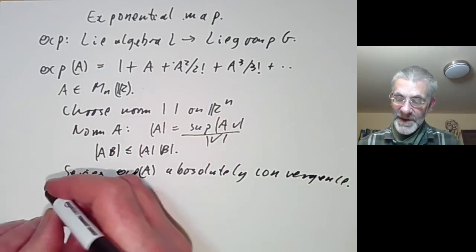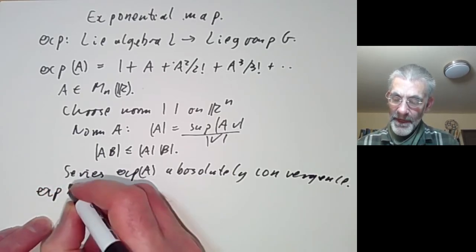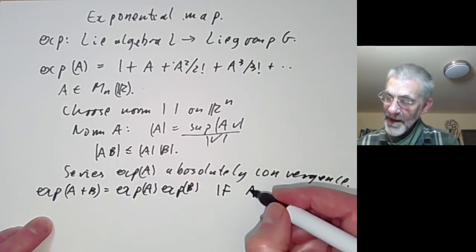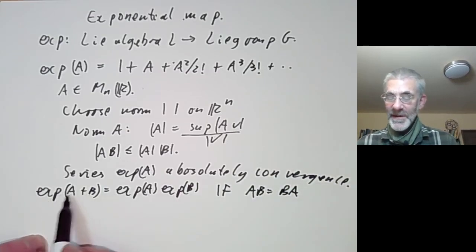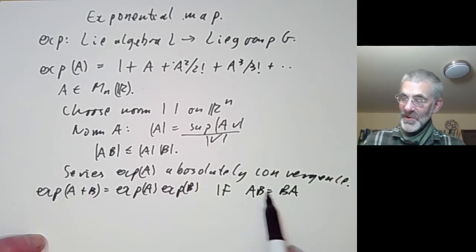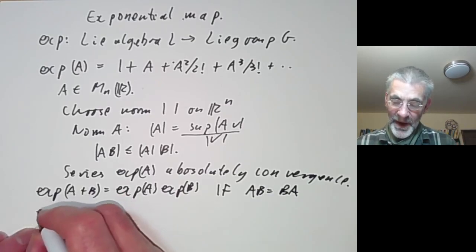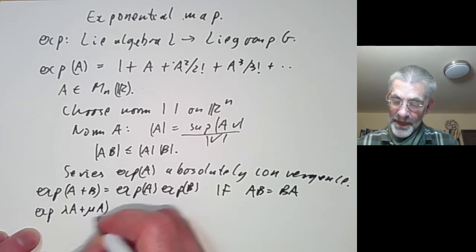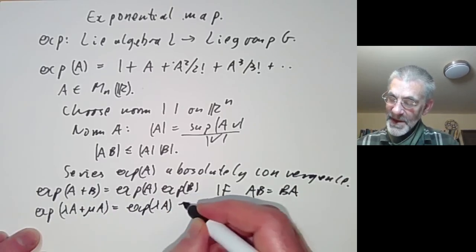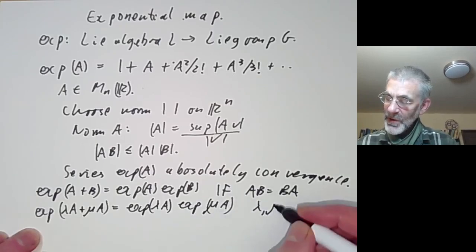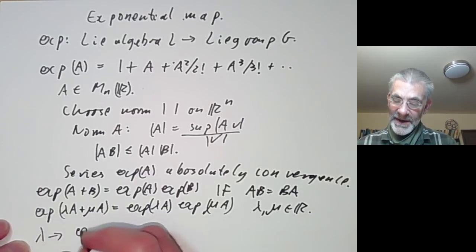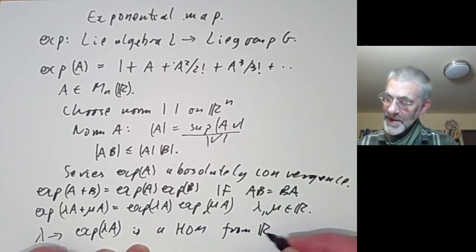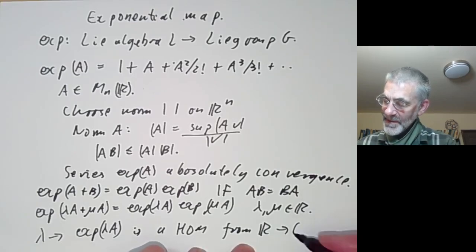We can also check some fairly obvious properties. For example, exp(A + B) = exp(A)·exp(B) if AB = BA. The proof is very similar to the proof of the analogous relation for real numbers, except you do need to use convergence at some point. In particular, exp(λA + μA) = exp(λA)·exp(μA) for any real λ and μ. So the function taking λ to exp(λA) is a homomorphism of groups from the reals to whatever group you're working with, say GL_n(ℝ).